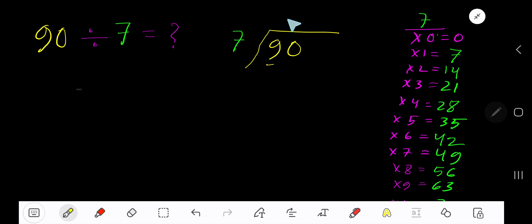7 goes into 9 how many times? 2 times 14 which is greater, so 1 time. 1 times 7 is 7, subtract to get 2. Bring down the next digit, 20. 7 goes into 20 how many times? 3 times 21 which is greater, so 2 times. 2 times 7 gives you 14. If you subtract, then you are getting 6.